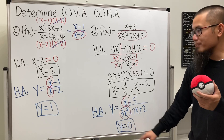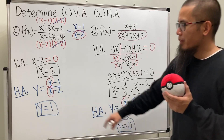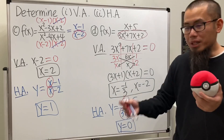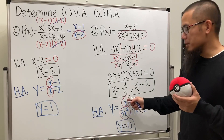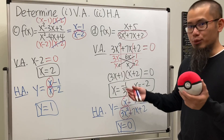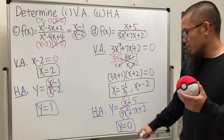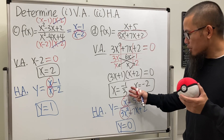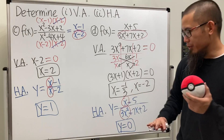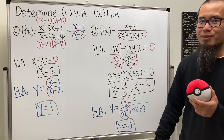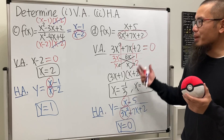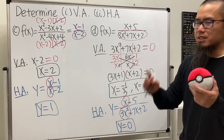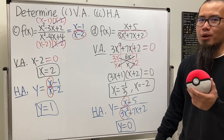To summarize: if the degree on the bottom is bigger, the horizontal asymptote is y = 0. If the degrees are the same, you cancel the leading coefficients. If the degree on top is bigger, there is no horizontal asymptote. That covers all four examples — hopefully this helps!